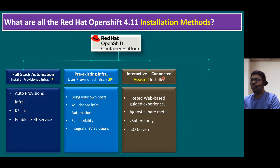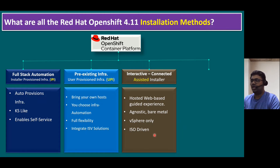The third method is the interactively connected Assisted Installer. With this method, you interact with Red Hat to build the assisted installer, using a hosted web-based guided experience for agnostic bare metal. Currently this method supports only vSphere platforms, and it provides an ISO-driven image file.